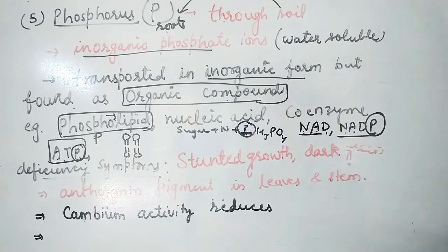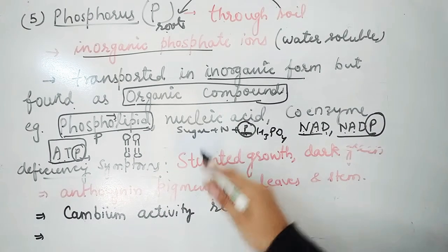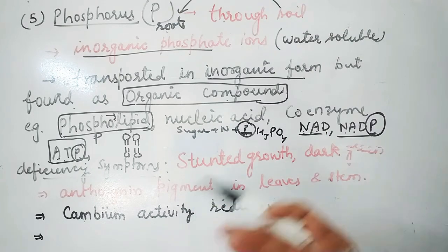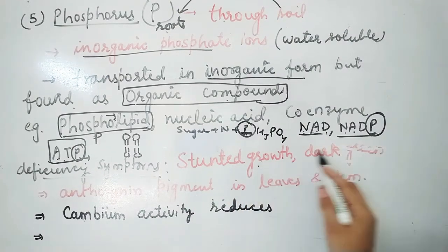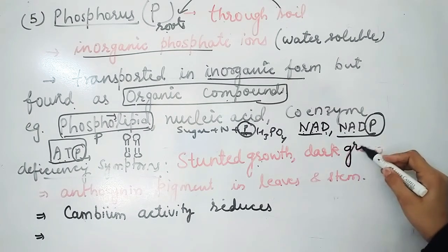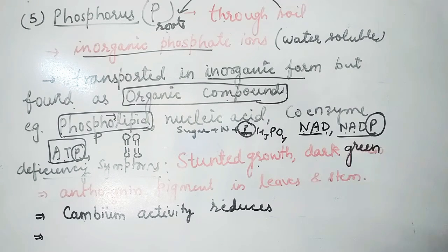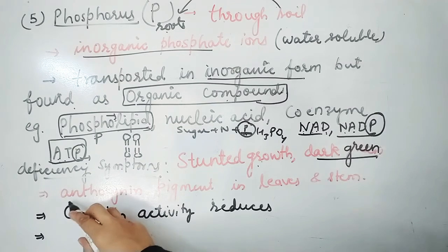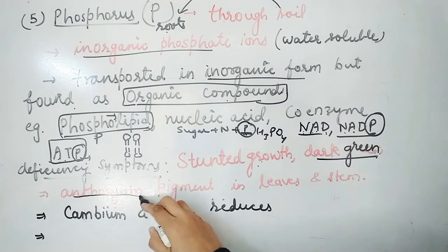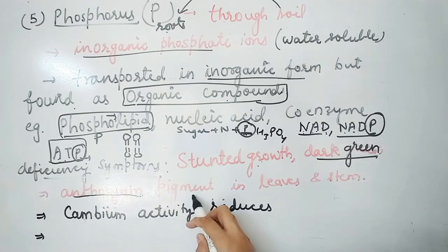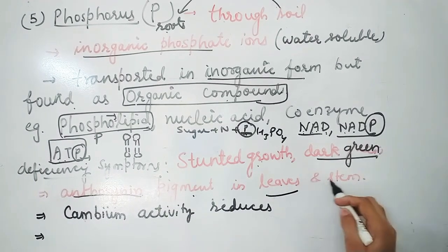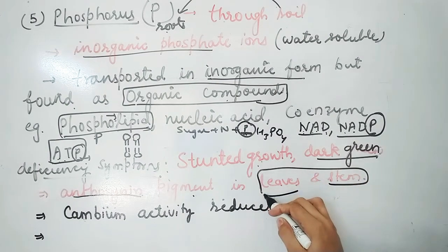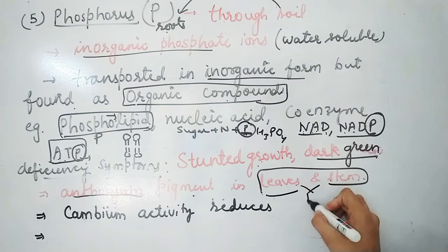The deficiency symptoms of phosphorus include stunted and dwarf growth of the plant. Interestingly, leaves show a dark green color — unlike nitrogen deficiency where leaves are yellow. However, similar to nitrogen deficiency, anthocyanin pigment also forms in leaves and stems under phosphorus deficiency.